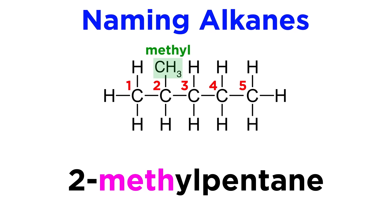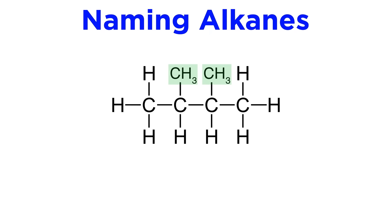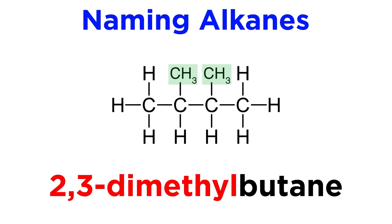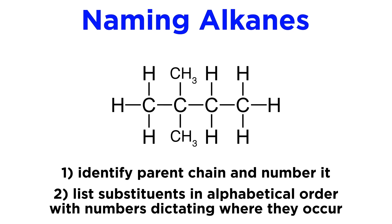Methyl utilizes the prefix "meth", meaning one, and then a different suffix because it is acting as a substituent. So this is 2-methylpentane. We could also have 3-methylpentane if the methyl is on carbon-3. Sometimes there is more than one substituent. If they are the same kind, we name them together, specifying where they are and how many of them with a special prefix. So this is 2,3-dimethylbutane. This would be 2,2-dimethylbutane, since the methyls are both on carbon-2. For any alkane, we identify the parent chain and number it, and then list any alkyl substituents in alphabetical order, with numbers designating their location on the main chain.